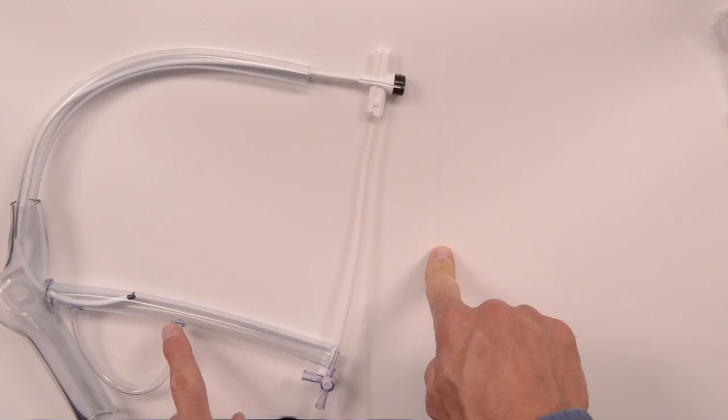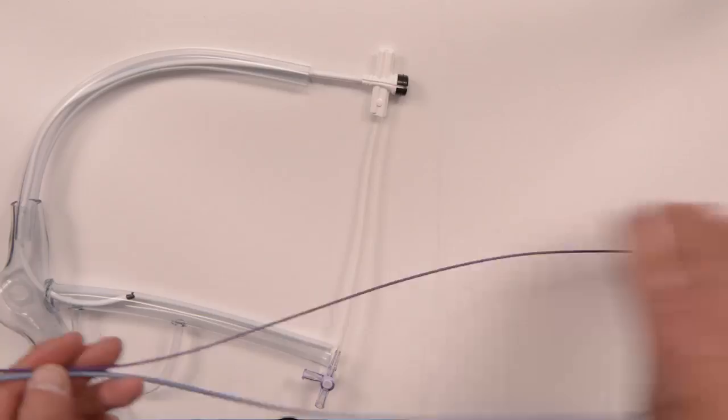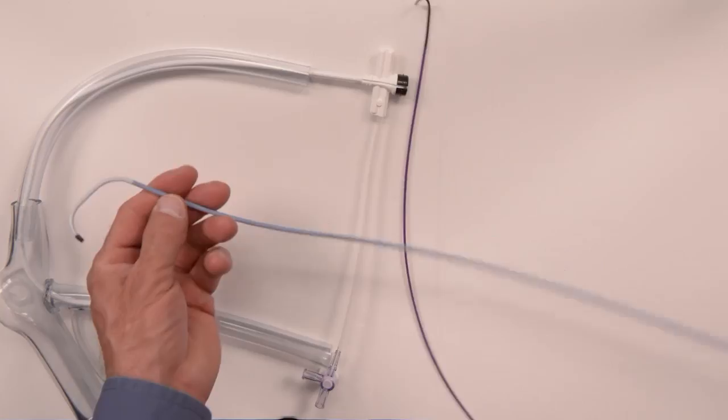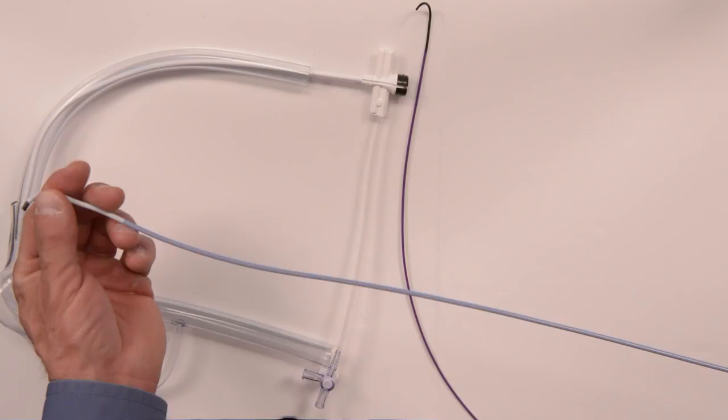Once we get to this point, the next step is the LVI. Within the LVI package comes two catheters. The first one is the LVI itself, which stands for lateral vein introducer. This is a seven French inner diameter catheter with a very soft atraumatic tip and a braided shaft.